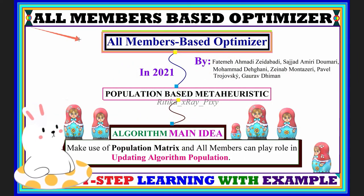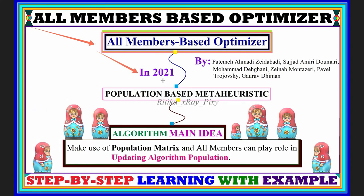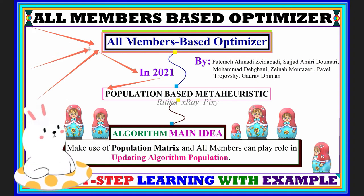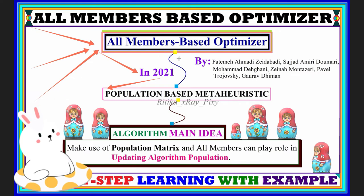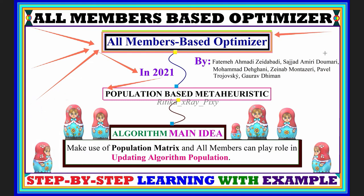The All Member Based Optimizer was introduced in 2021. It is a population-based metaheuristic optimization algorithm that can be used to solve different optimization problems. The author tested this algorithm on different benchmark test functions and compared its performance with other metaheuristics, finding that the All Member Based Optimizer provides better results.